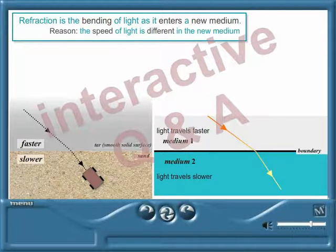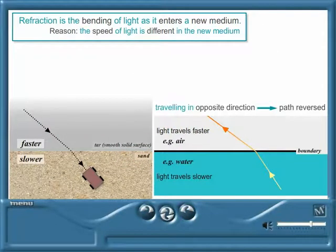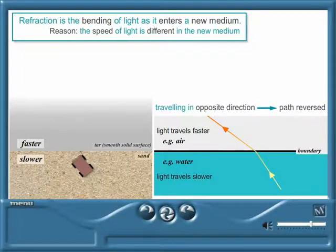Light is behaving exactly like the trolley we looked at. If the light is travelling in the opposite direction, it simply reverses its path, just like the trolley would. Make sure you understand why.